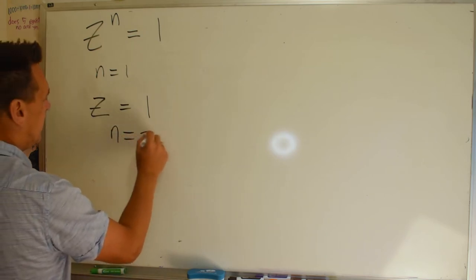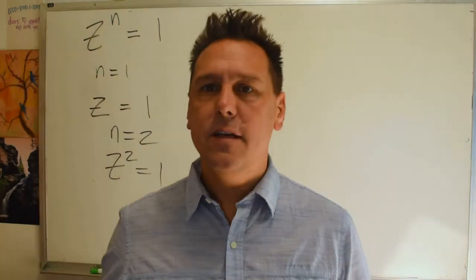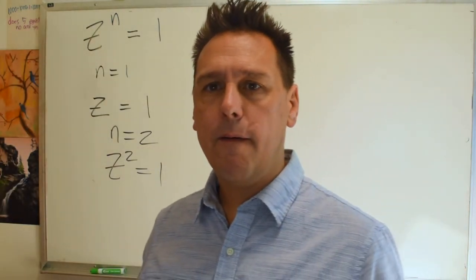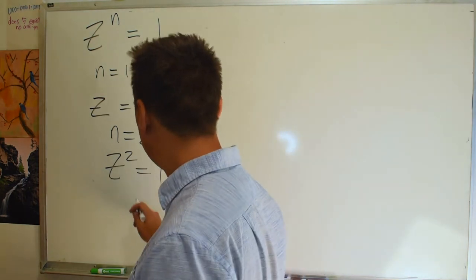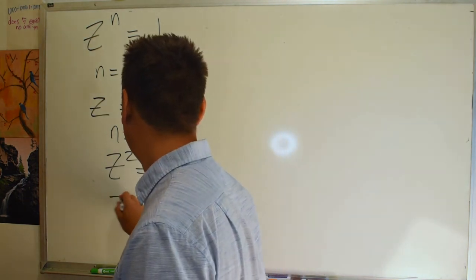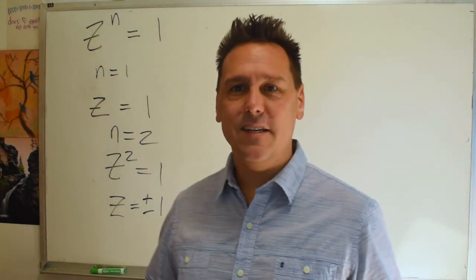For n equals two, I bet you also know what's going on. If I say that z squared is equal to one, what are our possible answers? Well there's one because one times one is one, but then we also get minus one. Plus or minus one. Easy enough.